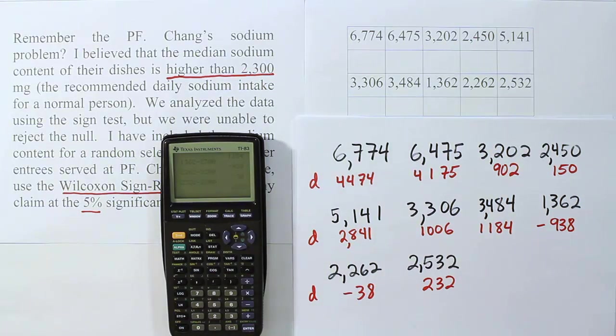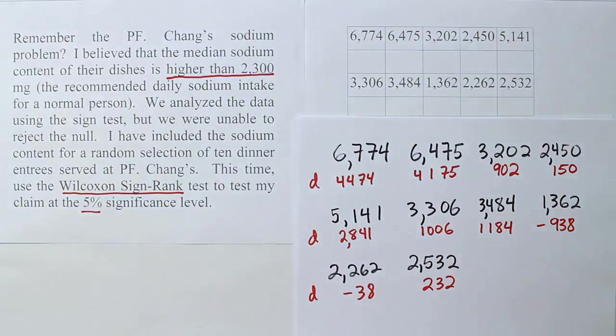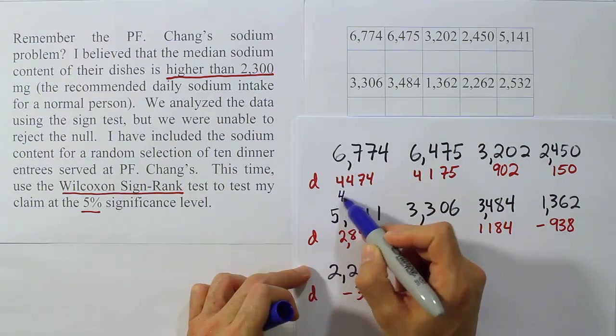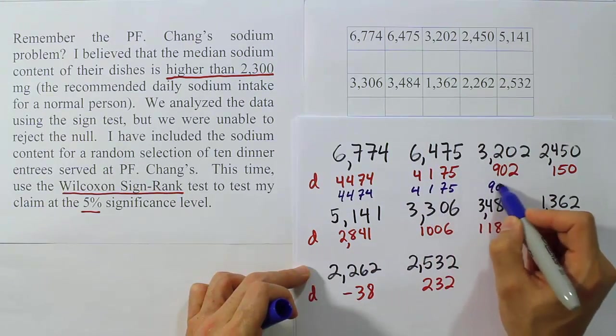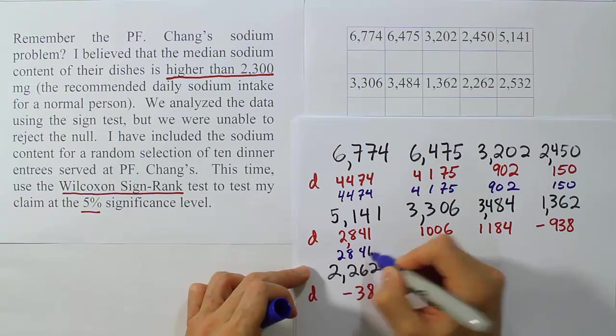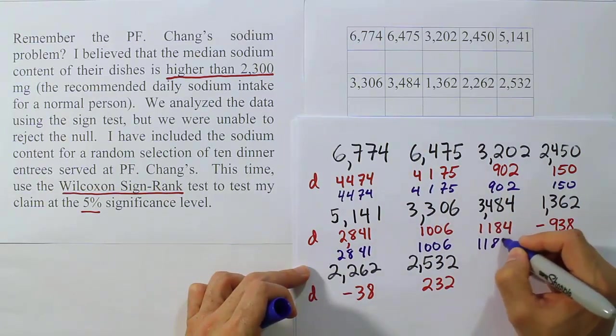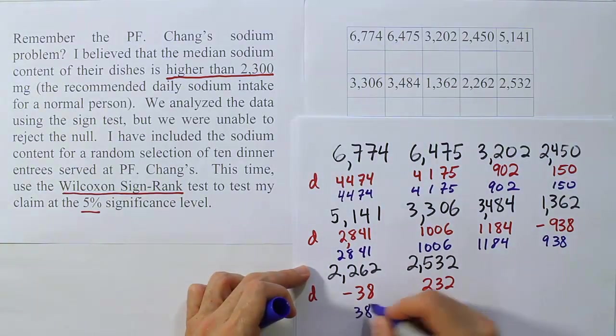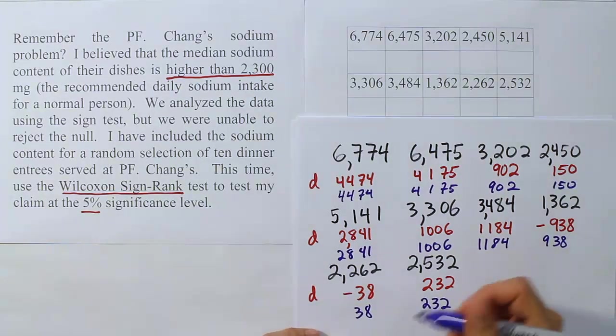From there, the next thing we have to do is come up with the absolute value of these differences. So the absolute value of the differences is going to be 4474, 4175, 902, 150, 2841, 1006, 1184, 938, 38, and 232. So those are the absolute values of the differences.